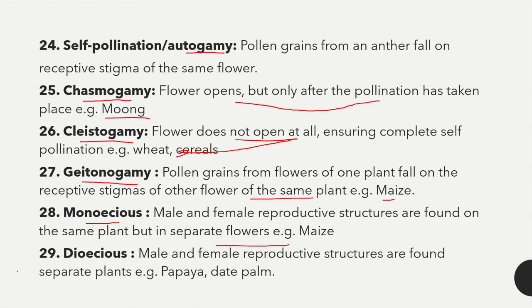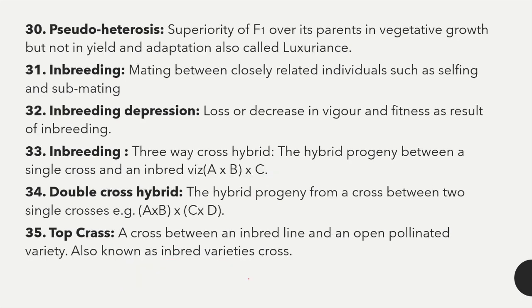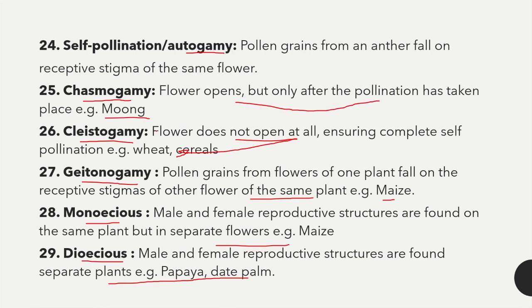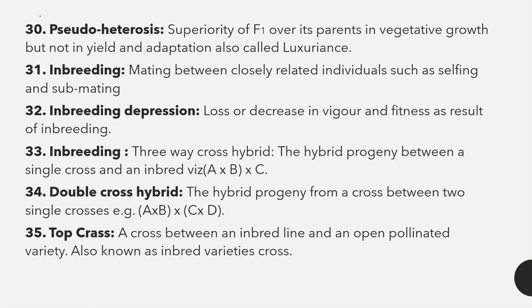Monoecious means both male and female reproductive structures are found on the same plant but in separate flowers, for example in maize. Dioecious means male and female reproductive structures are found on separate plants, for example in papaya and date palm. Pseudoheterosis or luxuriance refers to the superiority of F1 over its parents in vegetative growth but not in yield and adaptation.